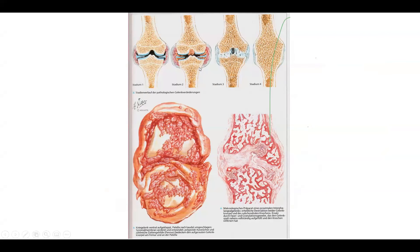This is the same slide as before. This is a knee joint opened, and here you can see what it looks like from the inside — all the red inflamed tissue, which is the same kind of pathology throughout.